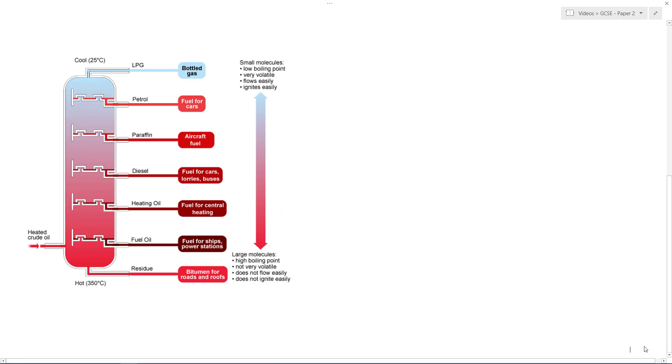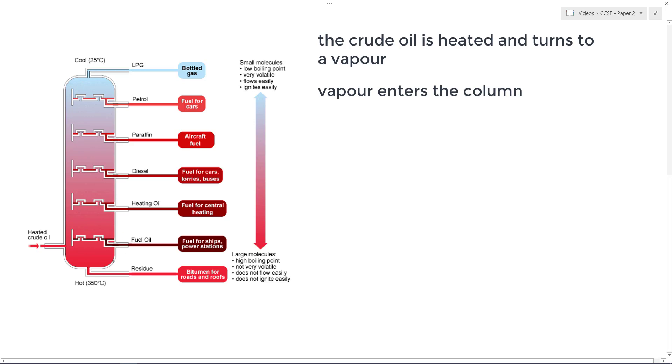So first of all, what we find is our crude oil is heated, and it's heated over here, and it's turned into a vapor. And that vapor is essentially what is going to enter the fractionating column.